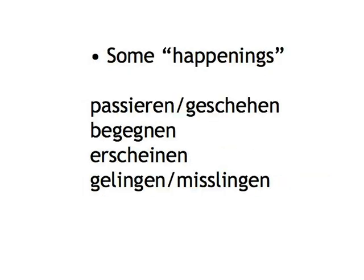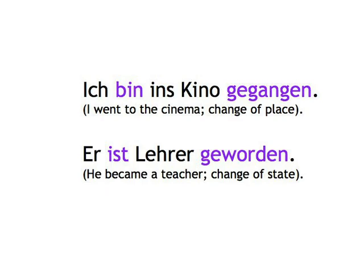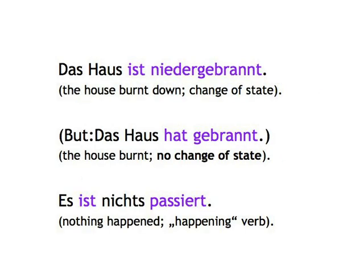Sein is also used with verbs relating to happenings and relative success, like passieren, geschehen (to happen), begegnen (to encounter), erscheinen (to appear), and gelingen or misslingen (to succeed, to fail). So: Ich bin ins Kino gegangen. Er ist leer geworden. Das Haus ist niedergebrannt — the house burnt down, change of state. But: Das Haus hat gebrannt — the house burnt, no change of state. Es ist nichts passiert.